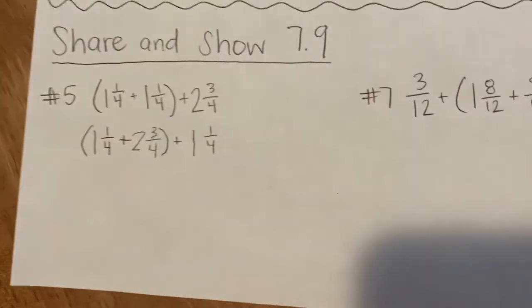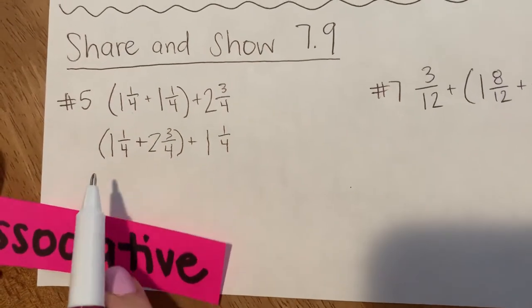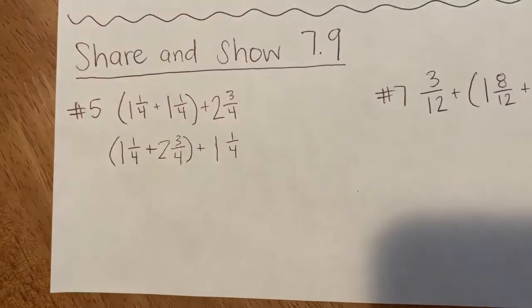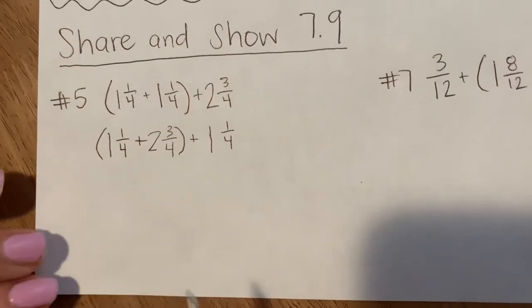Now I have to think, do I need to use the associative property? In this case my grouping is actually already good to go so I don't even need to use the associative property. The only property I needed to use for number 5 was the commutative property.